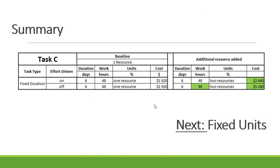In summary for fixed duration: with effort-driven on, work is fixed and duration is fixed — the two resources each work 24 hours at a total cost of $2,640. With effort-driven off, work can change — each resource works 48 hours for a total of 96 hours, and cost increases to $5,280.